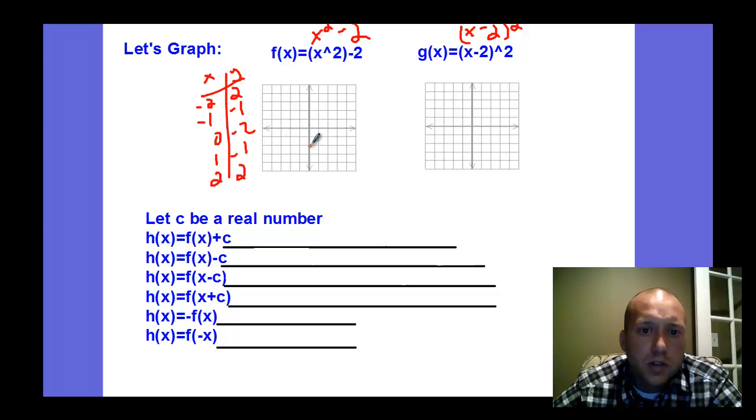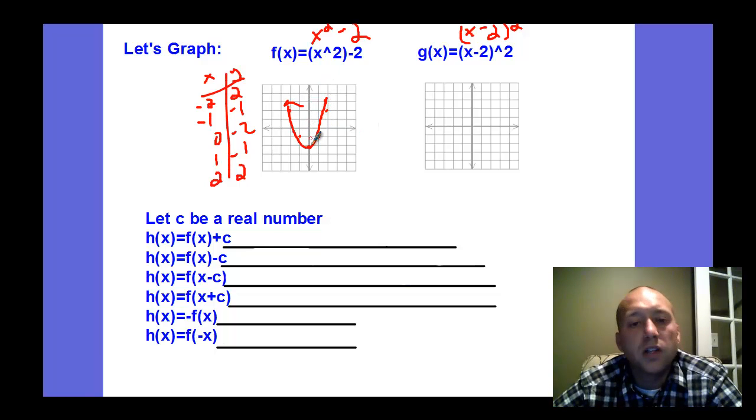And so I can plot these. 0, negative 2. And then 1, negative 1. And 2, 2. And I can also use mirror images because I know the shape of this is a quadratic. So here's my quadratic. Now from the parent function, what's changed? It's been this point, the origin, which was the vertex on the parent function, is now down here.